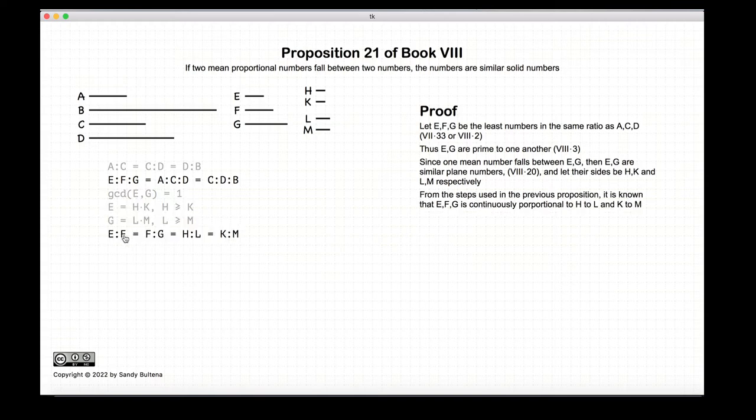So e to f is equal to f to g. And from our previous proposition, it's also equal to h to l and k to m. So we have demonstrated that in the previous proposition.